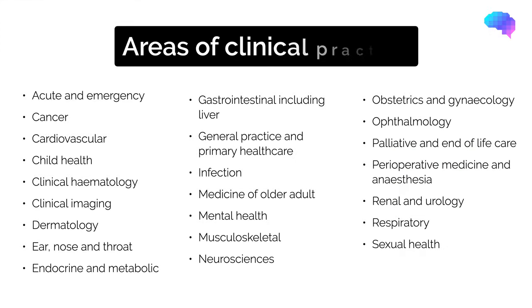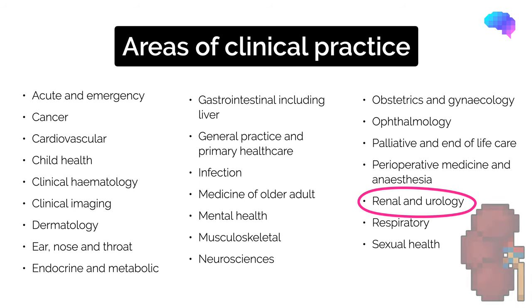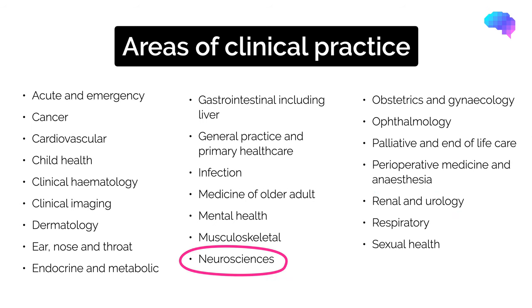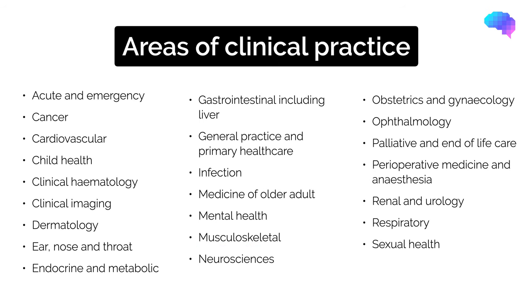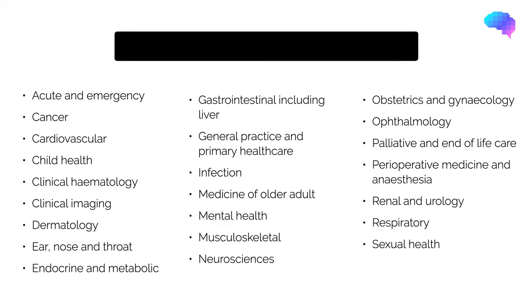These are the areas of clinical practice in the content map. You'll notice that in some situations, medical and surgical specialties have been combined — for example, renal medicine and urology, and neurosciences, which involves both neurology and neurosurgery. Conditions and patient presentations have been mapped to all of these areas of clinical practice.